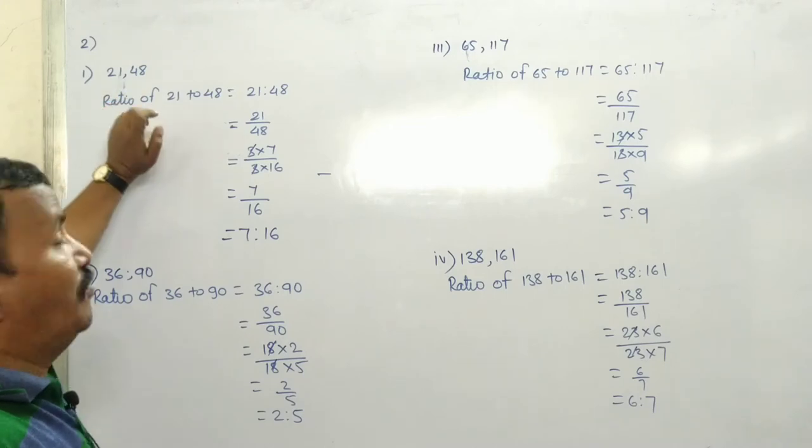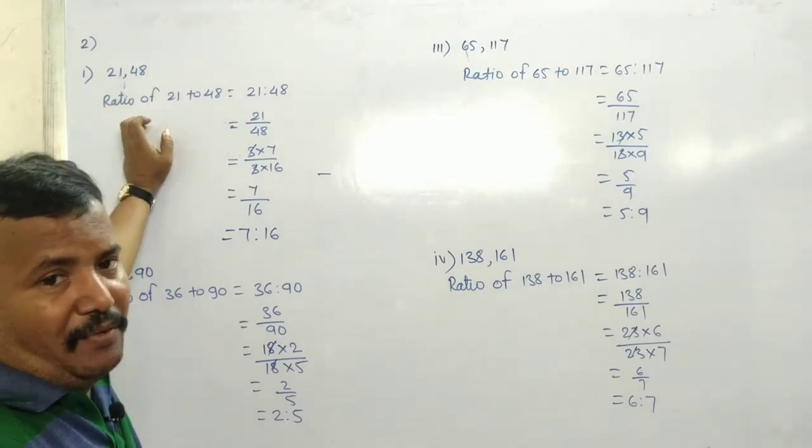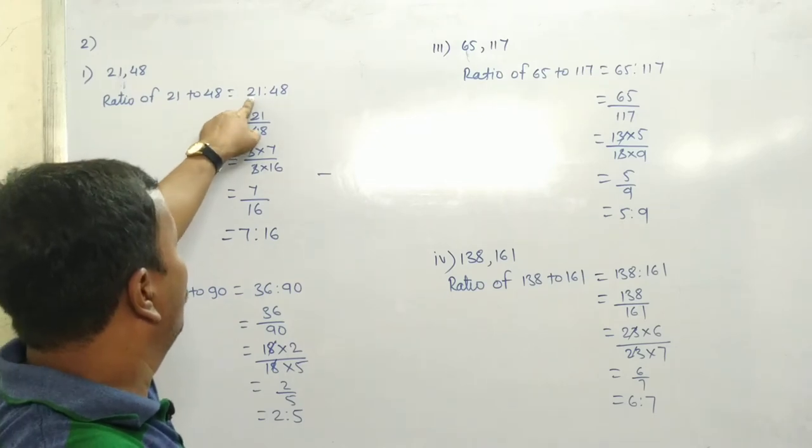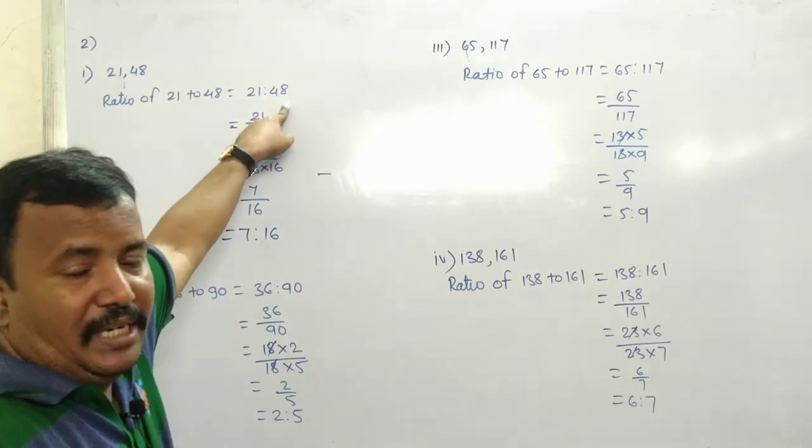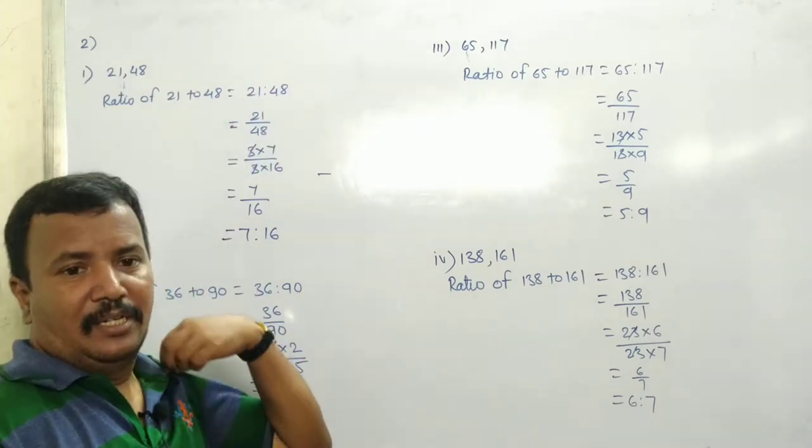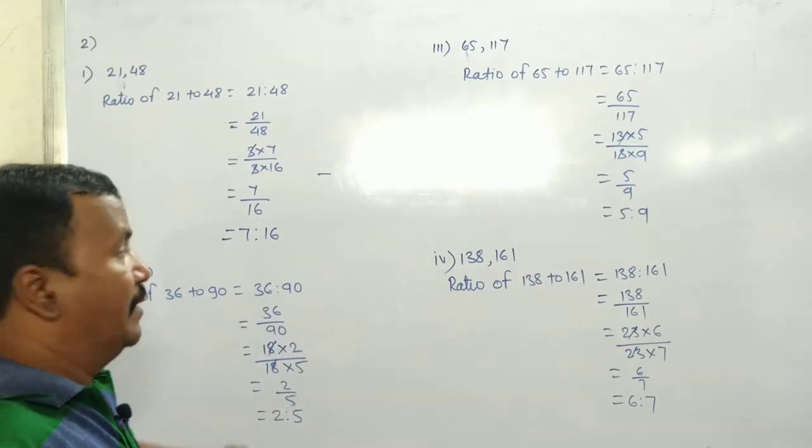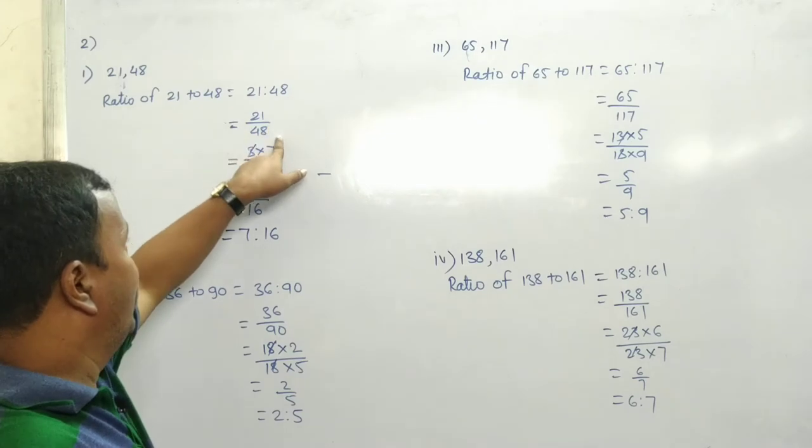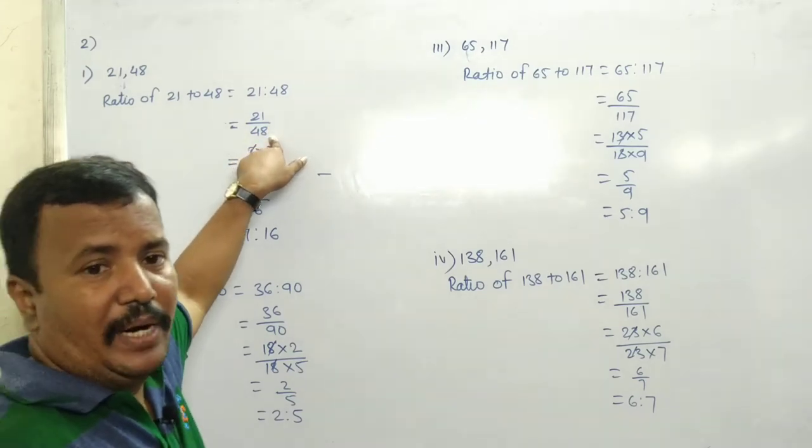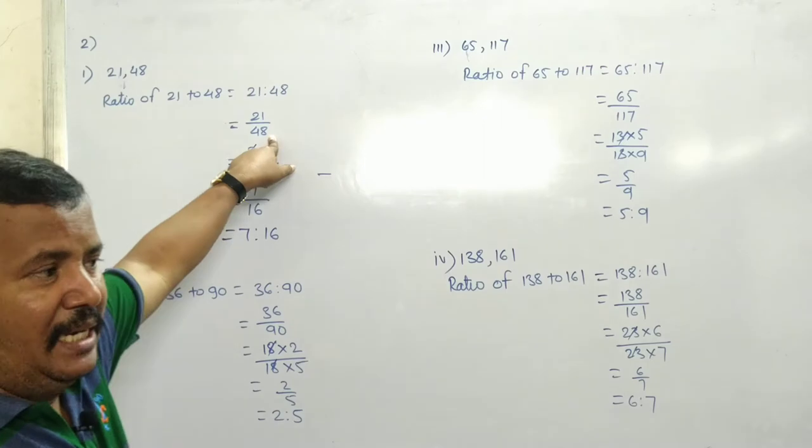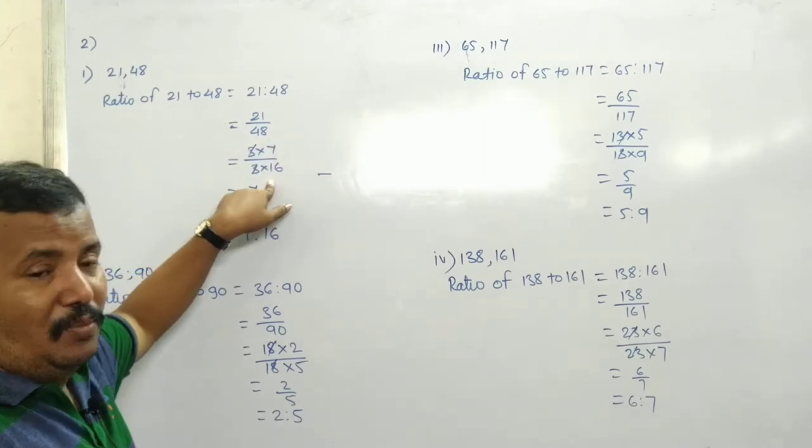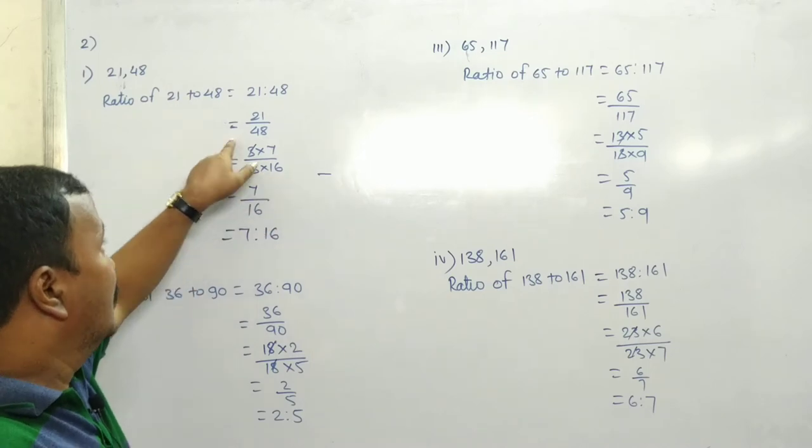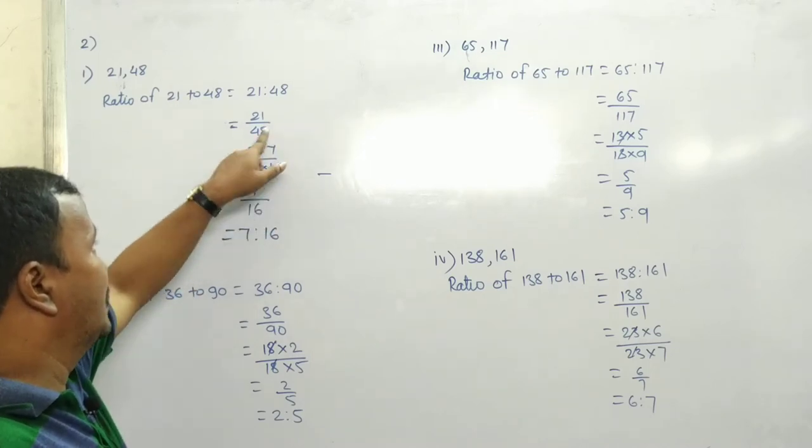First question is 21 and 48. Ratio of 21 to 48 equals 21 divided by 48. If you have tables, you can solve the problem. 3 times 7 is 21 and 3 times 16 is 48.